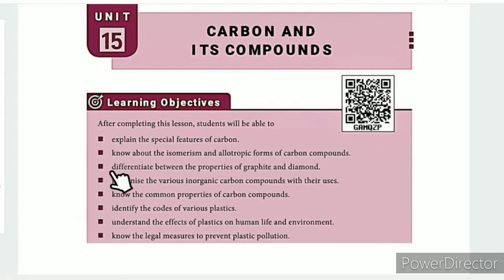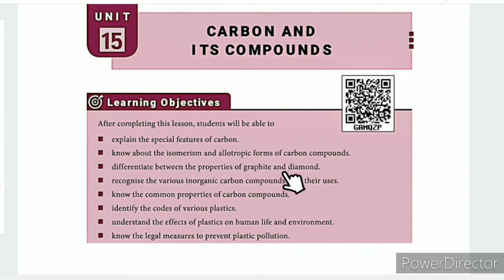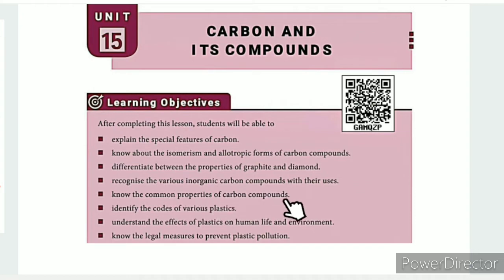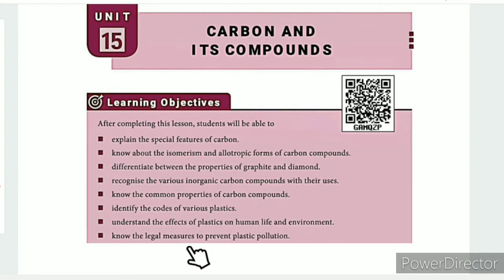The learning objectives are: explain the special features of carbon; know about isomerism and allotropic forms of carbon compounds; differentiate between the properties of graphite and diamond; recognize the various inorganic carbon compounds with their uses; know the common properties of carbon compounds; identify the codes of various plastics; understand the effects of plastics on human life and environment; and know the legal measures to prevent plastic pollution.